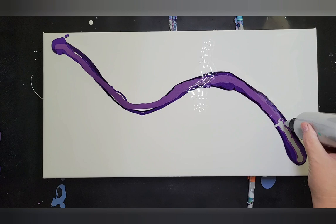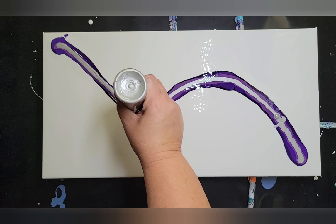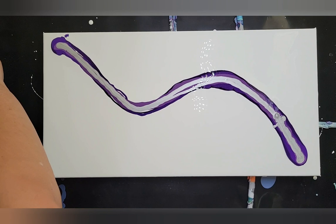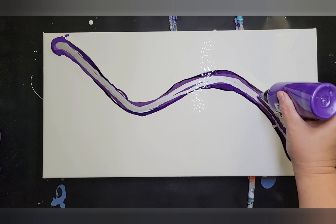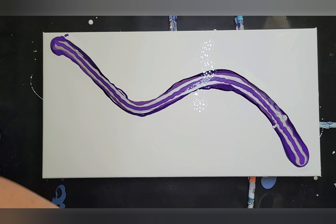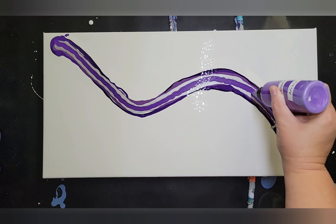I'm doing a lot of silver. I want the silver to really show through on this. This is the Pebeo Silver, so it's not going to create a huge amount of cells. So I can use it more liberally than, say, the Deco Art Silver, which would take over and just create way too many cells.